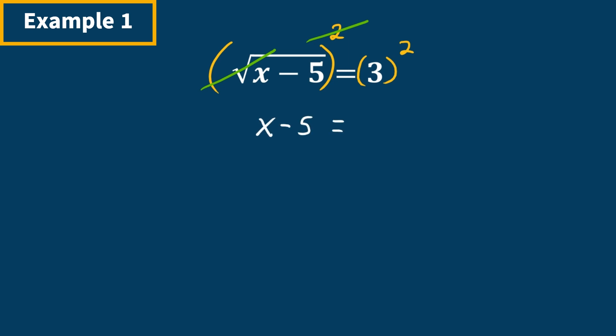That's going to be equal to 3 squared, which is 9. From here we add 5 to both sides — the fives cancel — and what we have left is x is equal to 9 plus 5, which is 14.